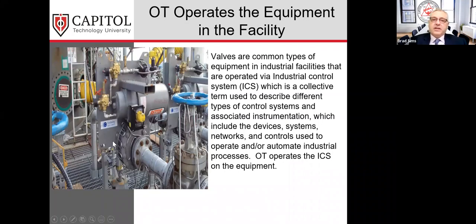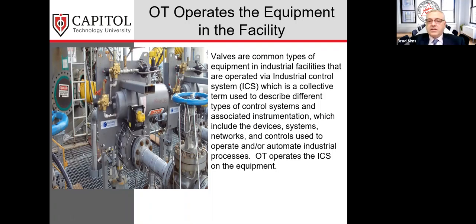Operational technology tells the industrial control systems in the facility what to do. A common piece of equipment in industrial facilities is a valve — it turns something on and off. That liquid could be explosive or non-explosive. If the OT tells a valve to open or close at the wrong time, it could do major damage to the facility — it could blow up a facility. A foreign attack gaining control of the OT on equipment can wreak havoc, and this is the danger within critical infrastructure.